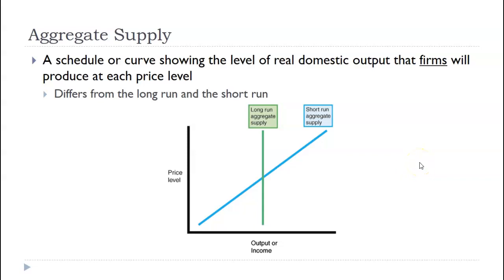Hi everybody, Mr. Farmer here, and today we're talking in AP Macroeconomics about the short-run aggregate supply curve and the long-run aggregate supply curve. We're going to jump right into this. It's a supply schedule showing the level of real output that firms will produce at each and every price level. There's long-run and there's short-run, just like there is in microeconomics.